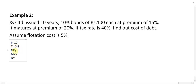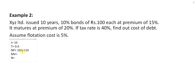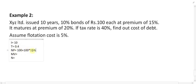Next, find out NP — net proceeds. The bond is rupees 100 each, sold at a premium of 15%. So NP equals 100 plus 15% of 100, which is 100 multiplied by 1.15. So NP equals 115.